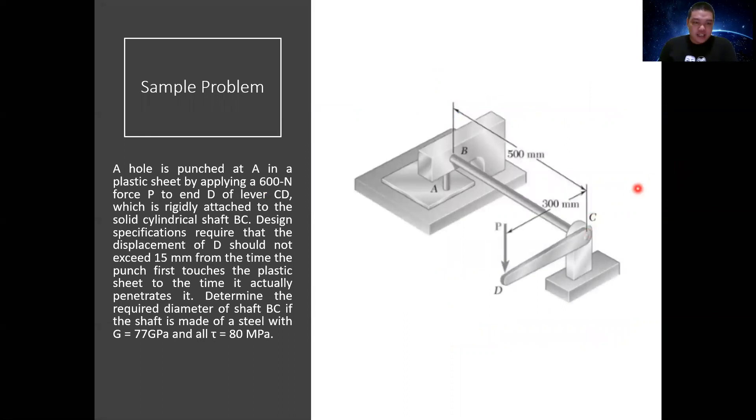Here's the problem: A hole is punched at A in a plastic sheet by applying a 600 N force P to end D of lever CD, which is rigidly attached to the solid cylindrical shaft BC. Design specifications required that the displacement of D should not exceed 15 mm from the time the punch first touches the plastic sheet to the time it actually penetrates it. Determine the required diameter of shaft BC if the shaft is made of steel with shear modulus 77 gigapascal and allowable torsional shearing stress of 80 megapascal.